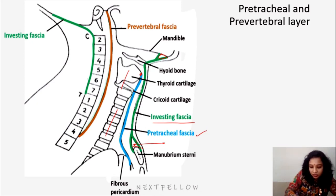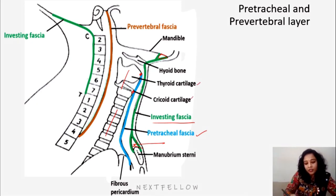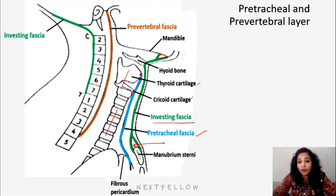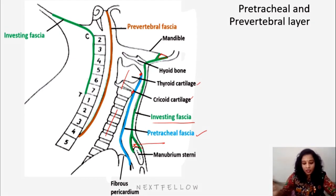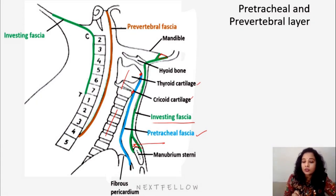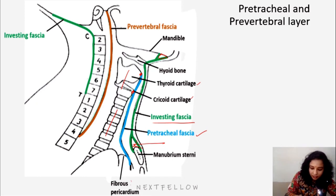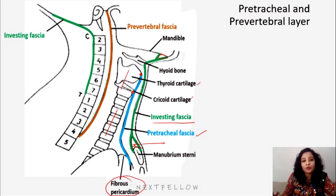The pre-tracheal layer blends with the buccopharyngeal fascia in the neck. In the buccal region and pharynx it is continuous to form buccopharyngeal fascia, and inferiorly it is continuous with the fibrous pericardium of the heart.